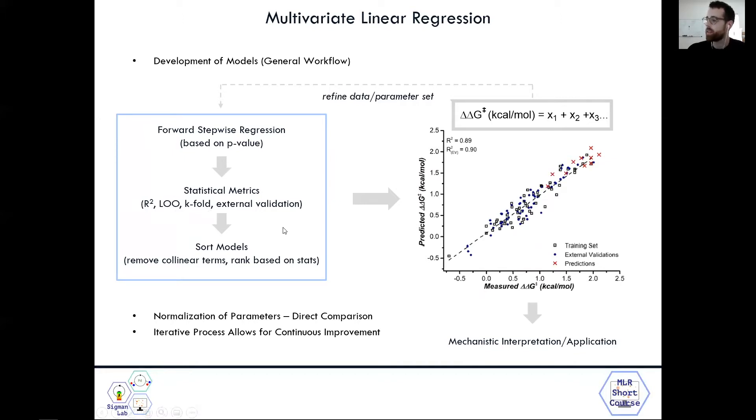And finally, we can sort these different models from the forward stepwise regression step. And the great thing about this is it can remove models that have those high collinearity terms, the parameters. And furthermore, it can rank based on stats. So you can start to compare them based on statistical scores.